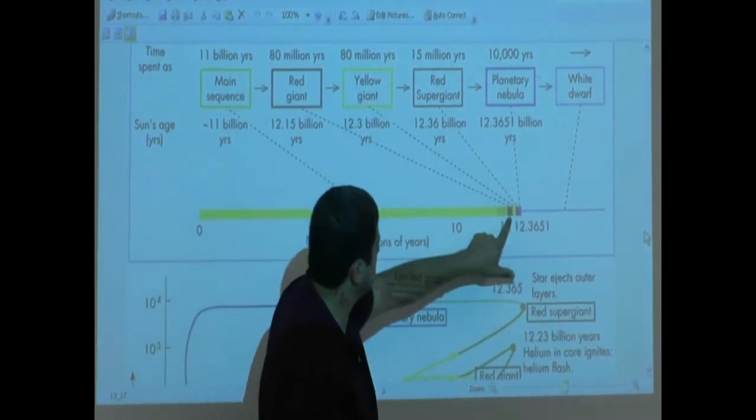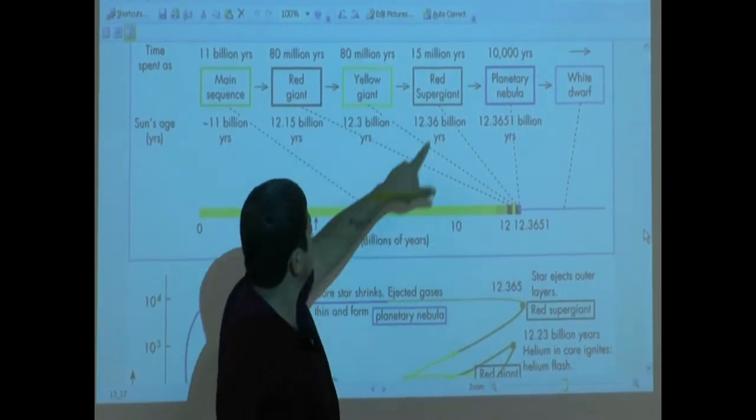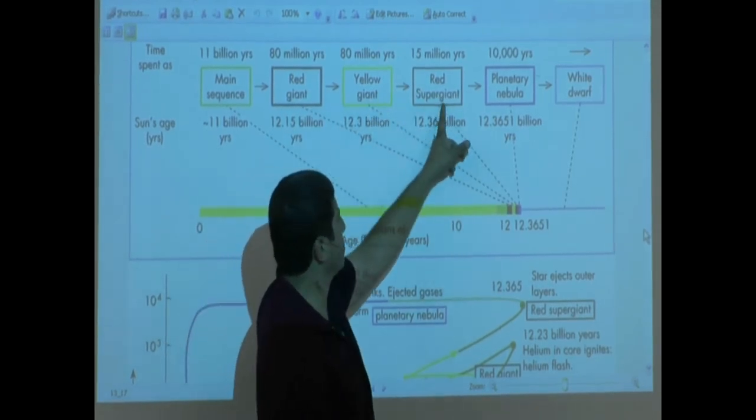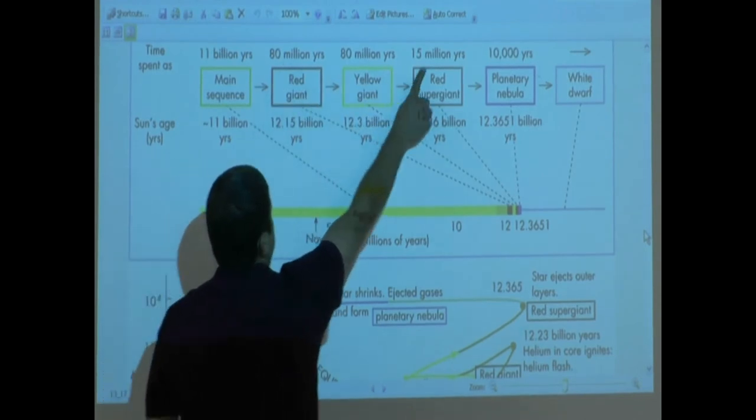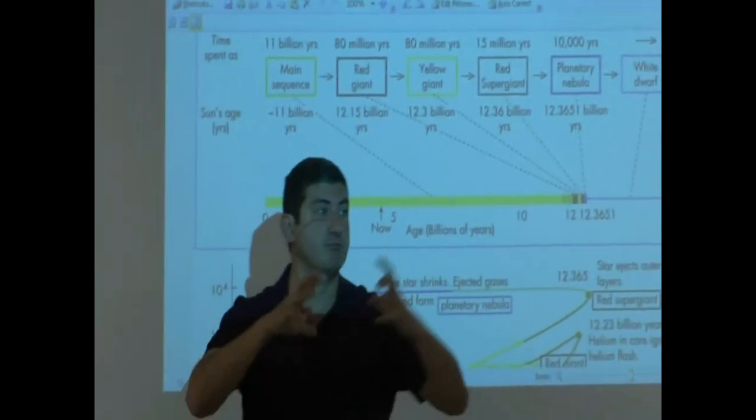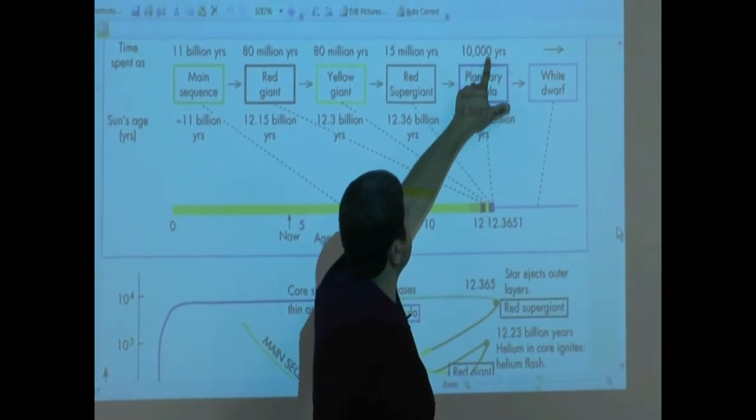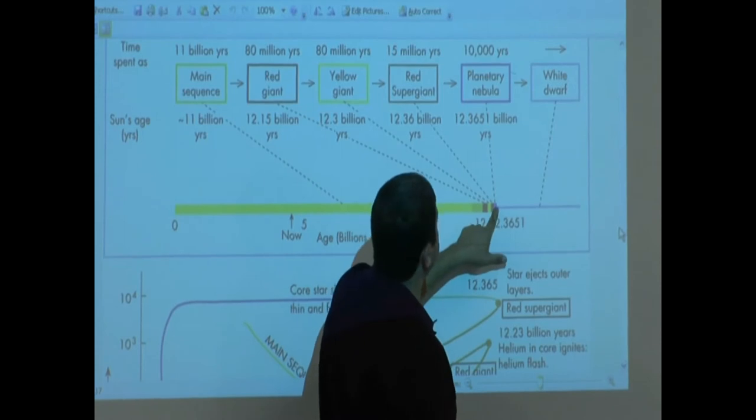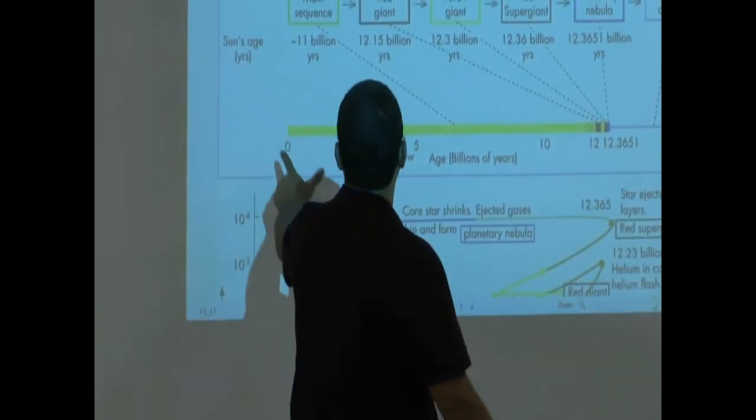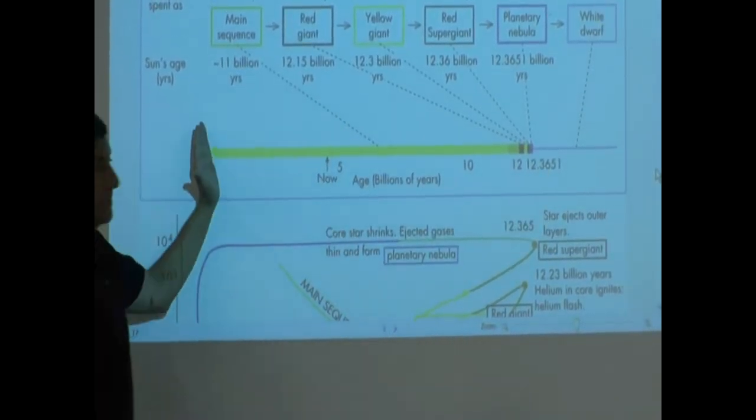Then it returns to being a yellow giant. That's this little yellow piece. That lasts another roughly 80 million years. Then it goes back to red giant. Now it's a supergiant, even bigger. Red giant, yellow, super. That lasts 15 million years - you see shorter, 80 to 15. From there it ejects most of the outer layers and becomes known as a planetary nebula. That takes about 10,000 years. After that, the core of the star ends up as a white dwarf. The whole thing will take about 12.3 billion years from the beginning of its main sequence lifetime.